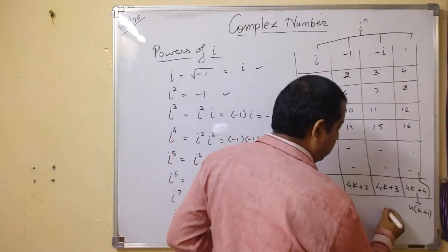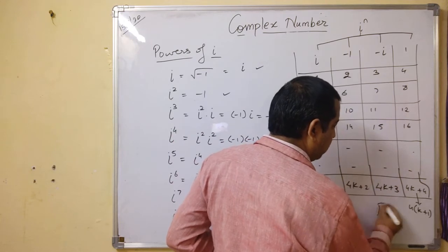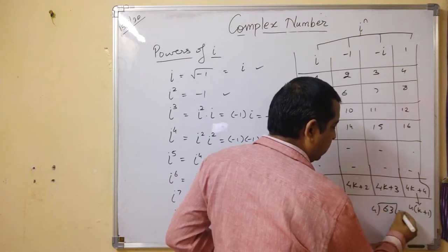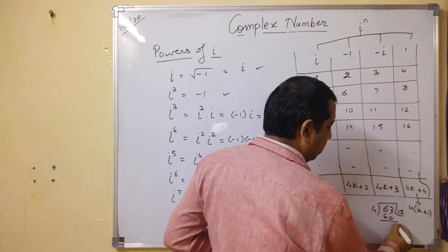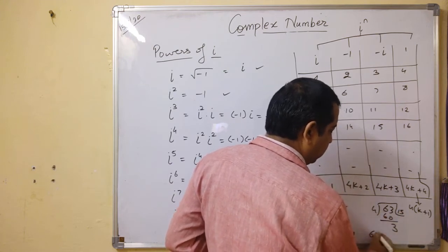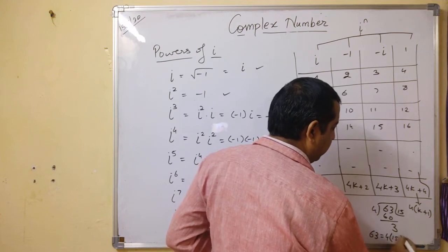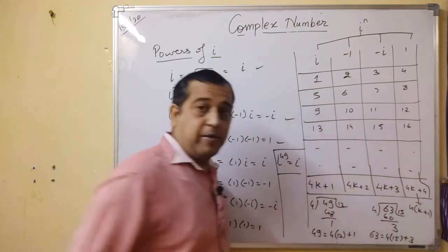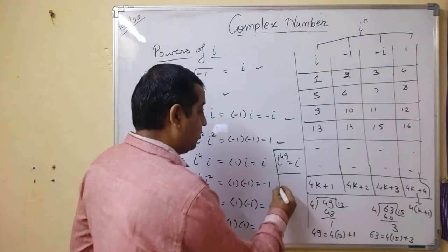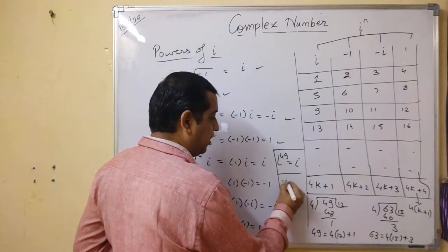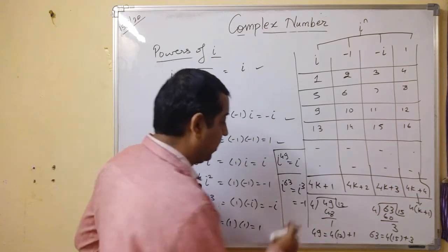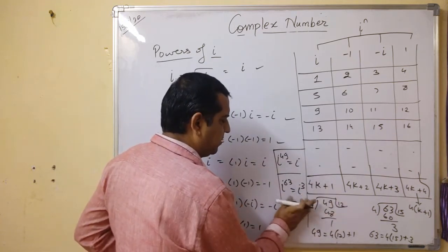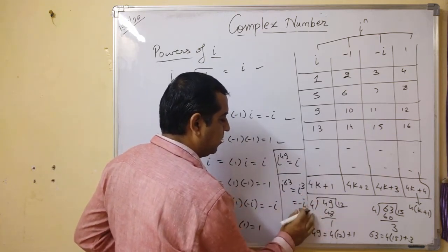Now, if we take i⁶³, when 63 is divided by 4, we get 4 times 15 plus 3. So remainder is 3. So i⁶³ is nothing but i³. And what is i³? It is -i.